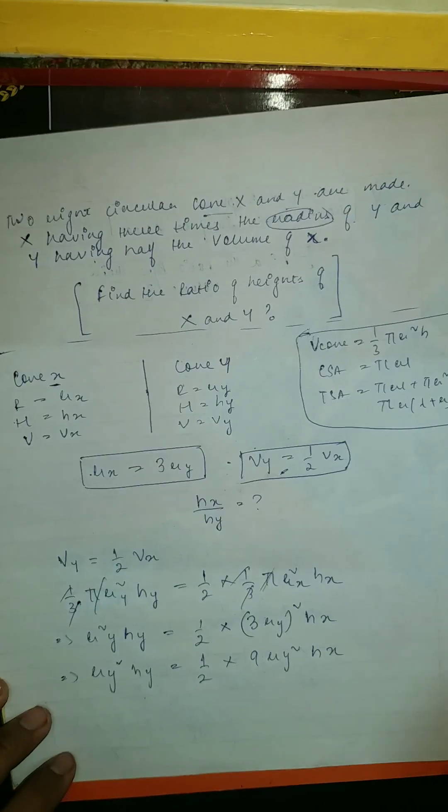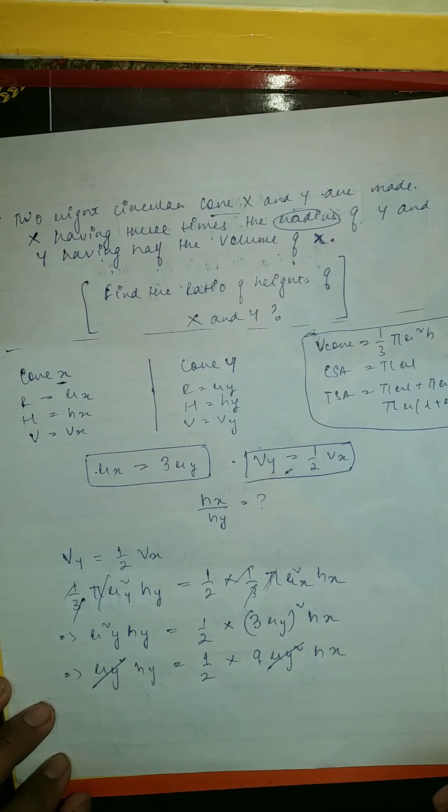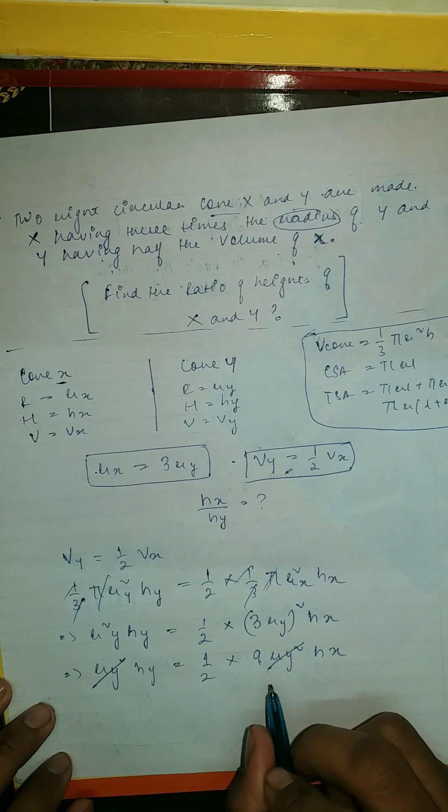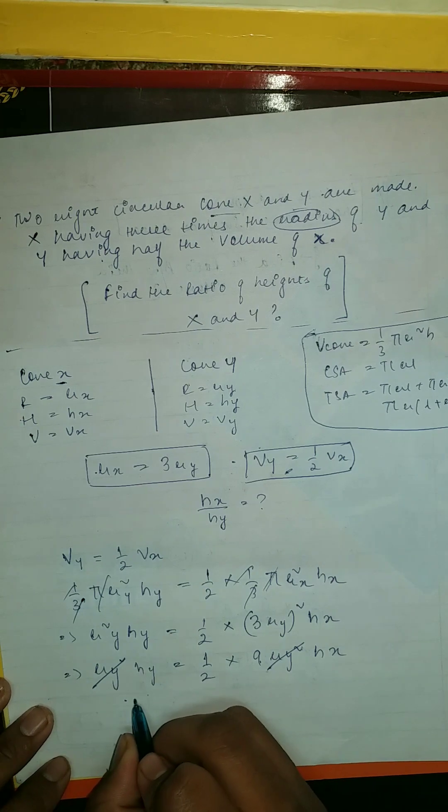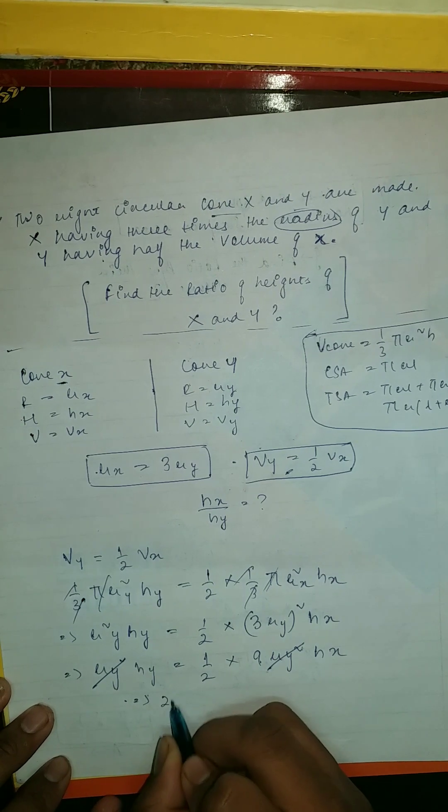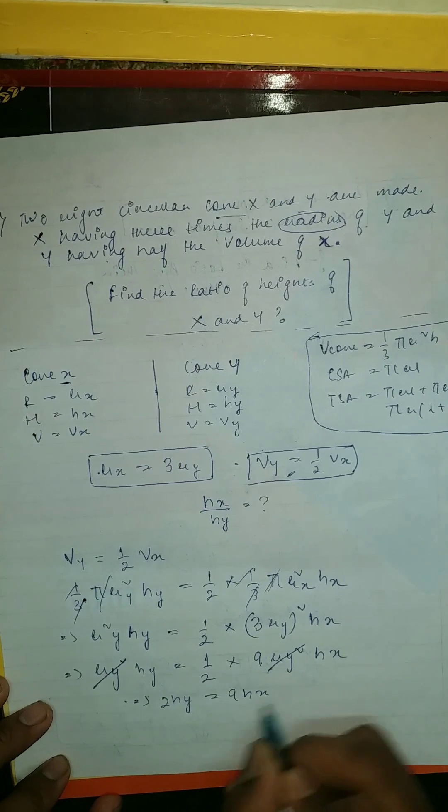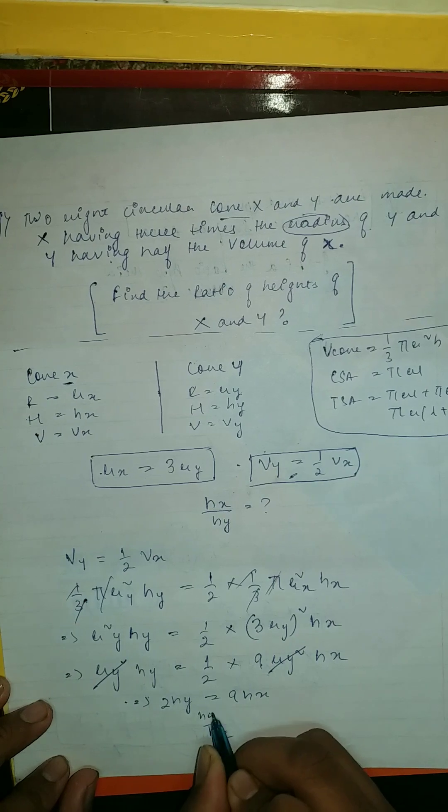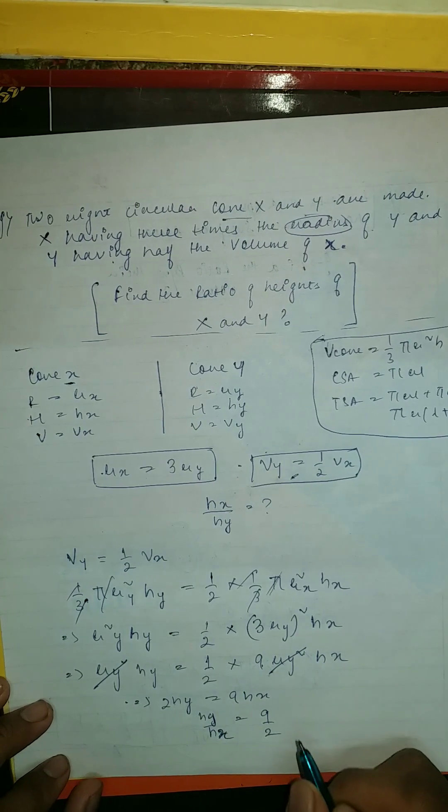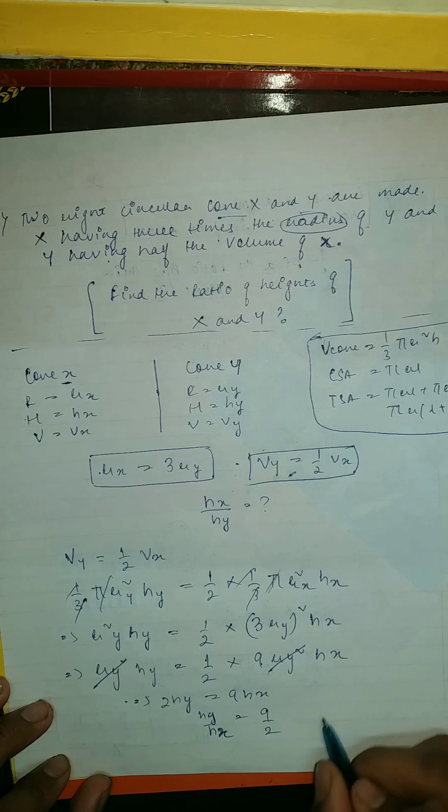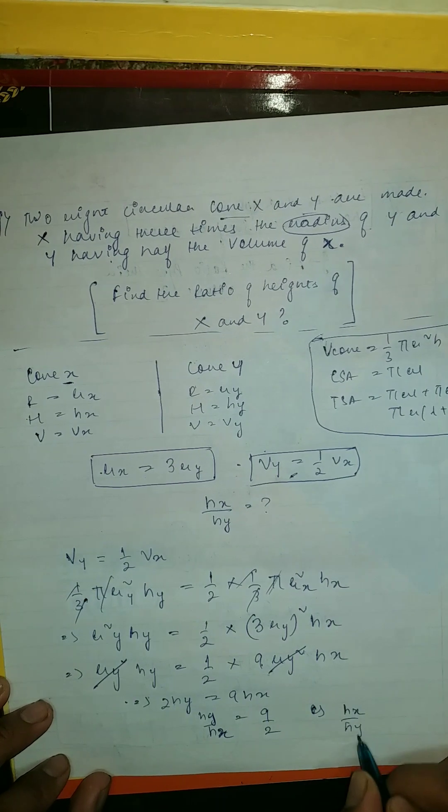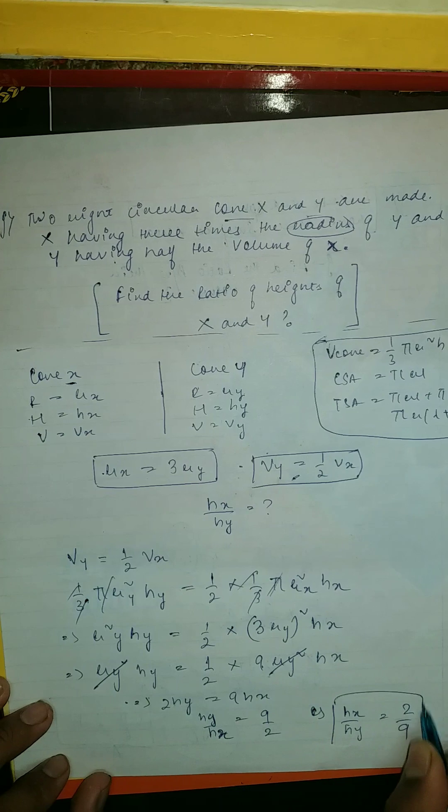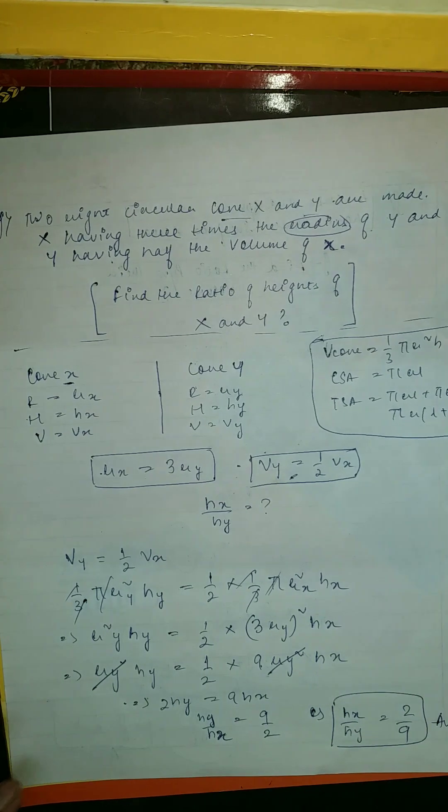So now we are left with 2hy equal to 9hx. So your hy upon hx is 9/2. We need hx upon hy, so we can say that hx upon hy equal to 2/9, which is your answer. And yeah, we have proved it very easily.